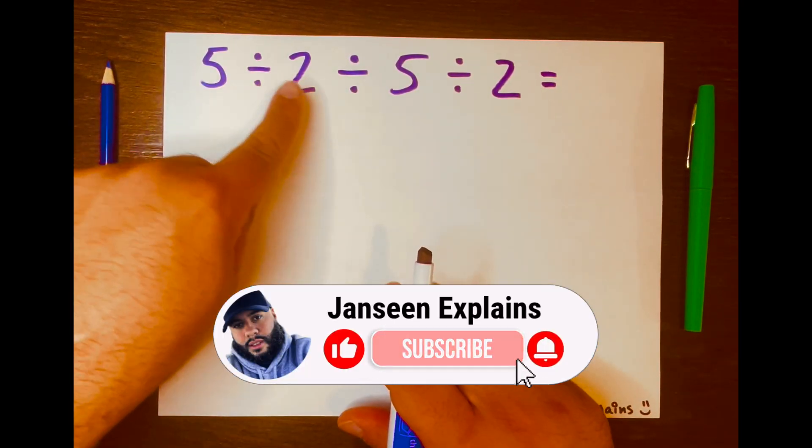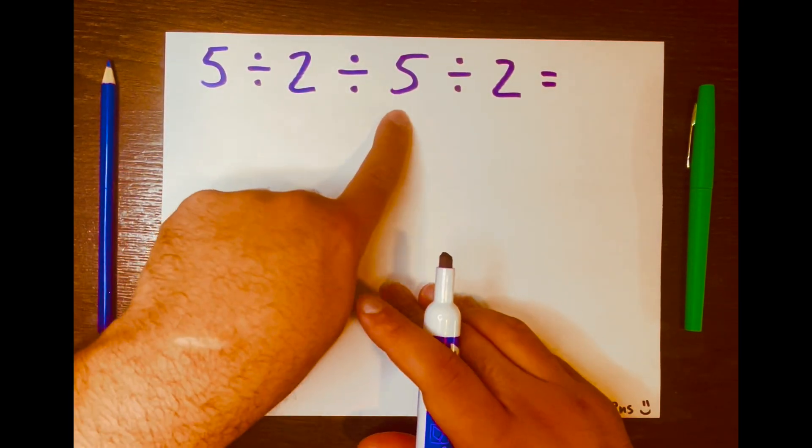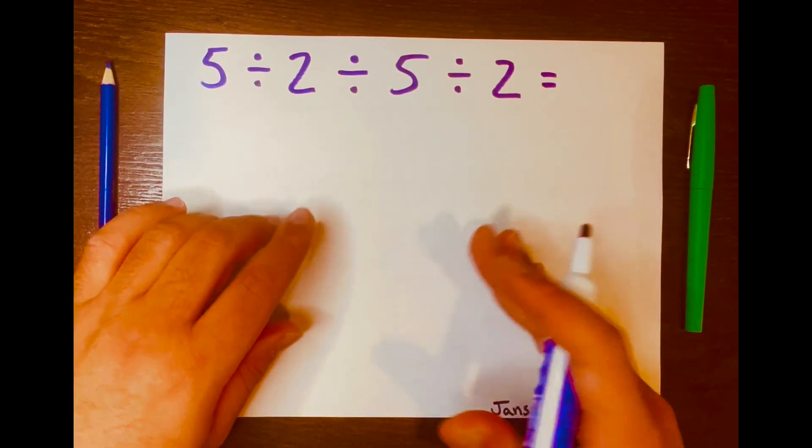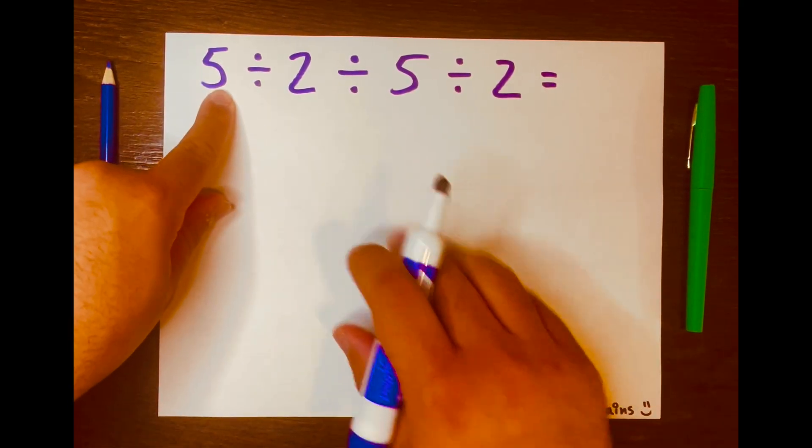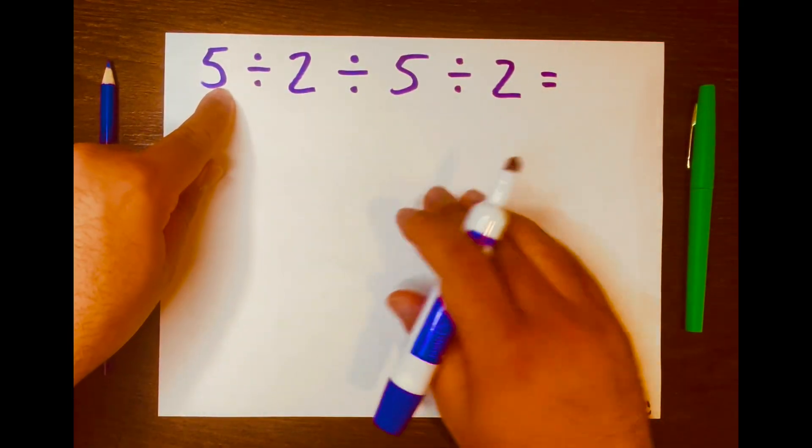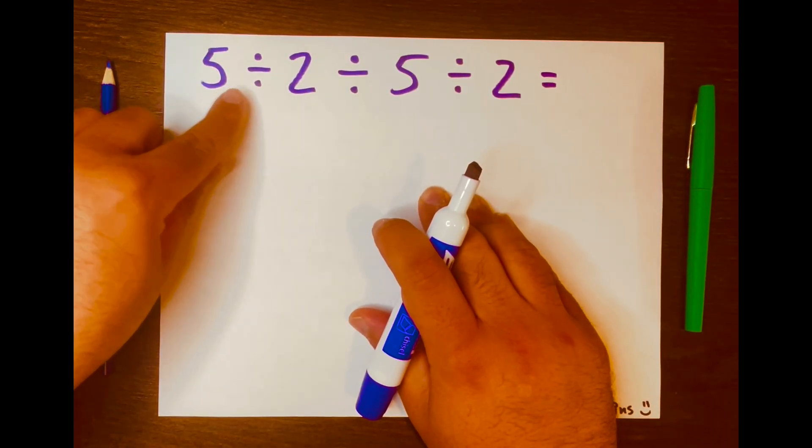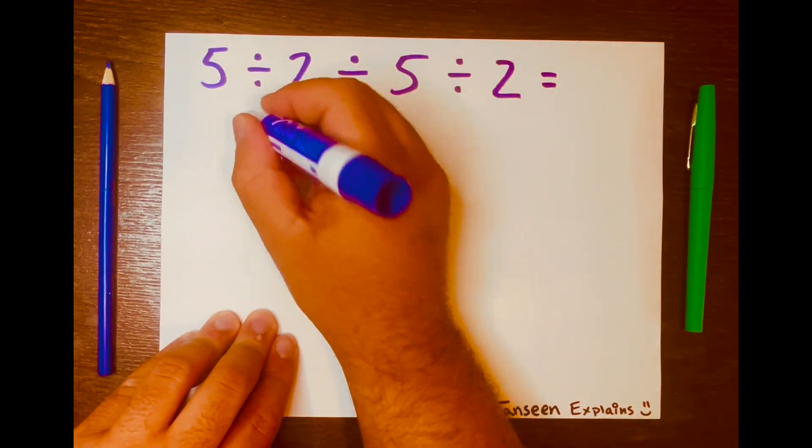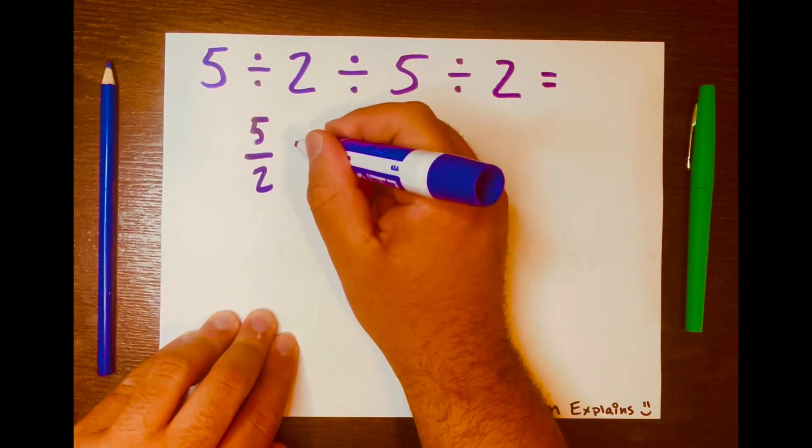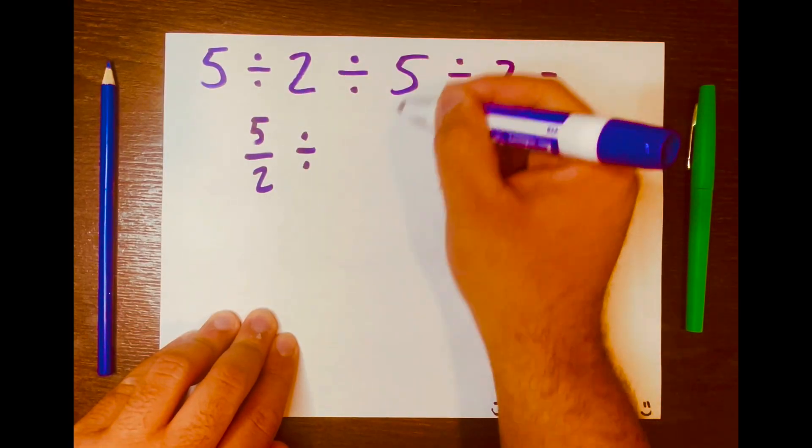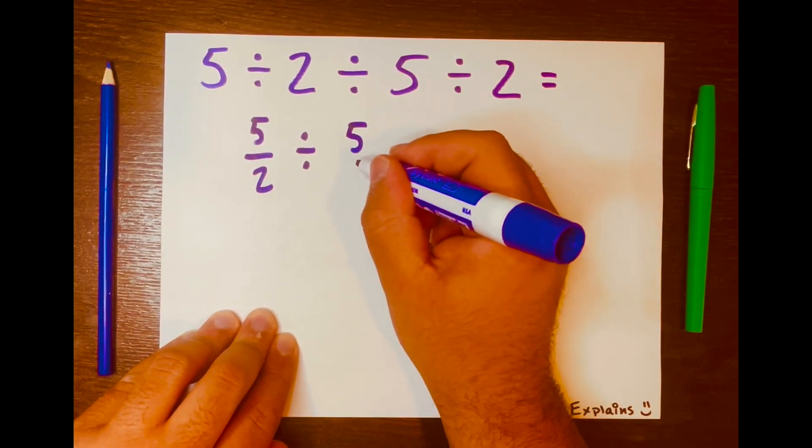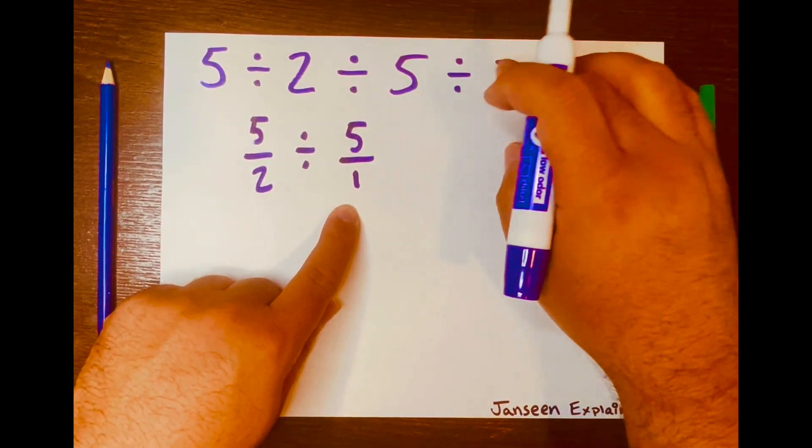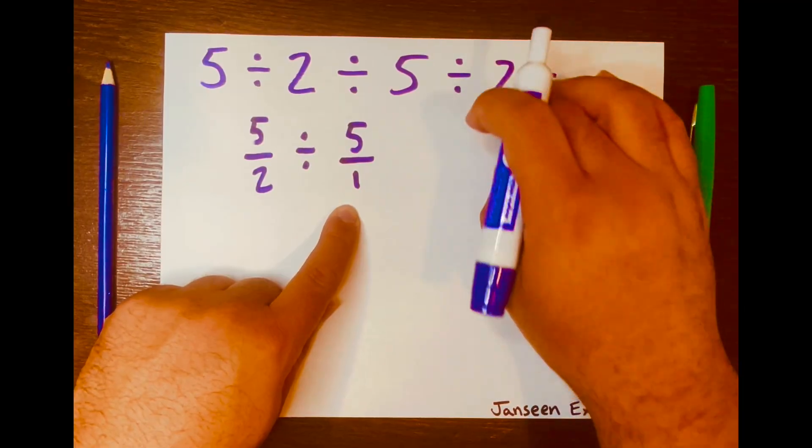We have 5 divided by 2 divided by 5 divided by 2. The first thing I'm thinking of is PAMDAS, and we work from left to right. All of these operations are divisions, so let's just work from left to right. We have 5 divided by 2, and I'll write that in fraction form, 5 over 2. Then bring down the division symbol, bring the 5 down, and I want to turn that 5 into a fraction. And then I'm just going to leave the division 2 alone.